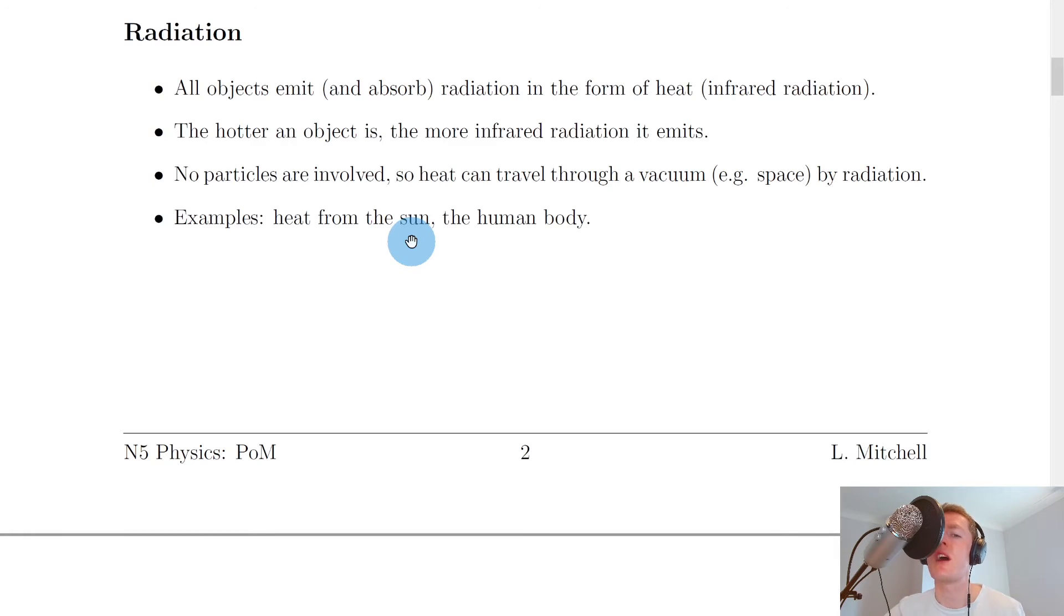Some examples of radiation include heat from the sun. The fact that heat from the sun travels in waves rather than particles means they can get through the Earth's atmosphere and through space, so they can reach us on Earth. We've also got the human body as an example. Because we are warm-blooded mammals, we're going to emit infrared radiation from our bodies.